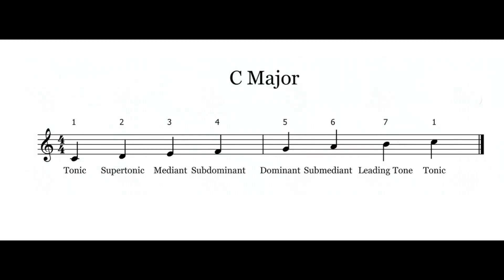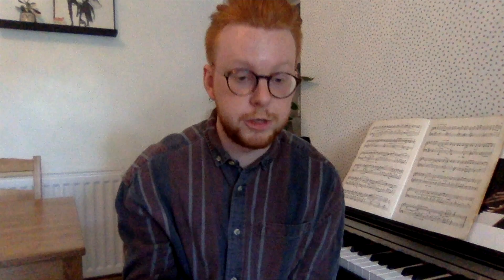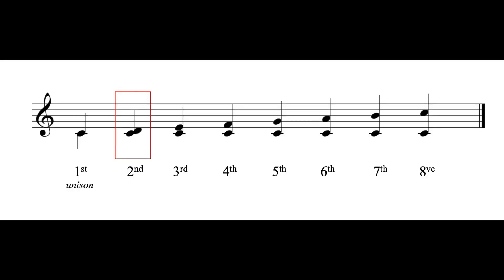Let's take a look at a C major scale. Imagine now that all of the notes relate to the bottom note C. We're going to count up, taking C as the bottom note — and this is really important — counting C as one. We have a C and a D. We count one, two. That's two. So we call the interval between C and D a second.